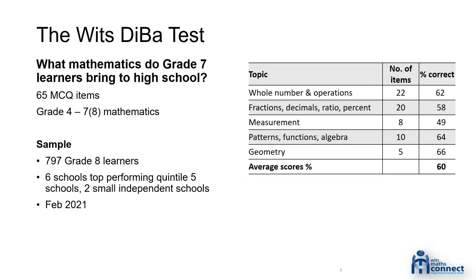That measurement result came as a surprise to us. As we started to dig back, we found that the TIMSS results, the ANA results — which were conducted in government schools in 2012, 2013, and 2014 — and other work done in the Western Cape all show that learners are not performing well on measurement. It's something we have on our radar, but it's not what I'm going to talk about a lot this afternoon.